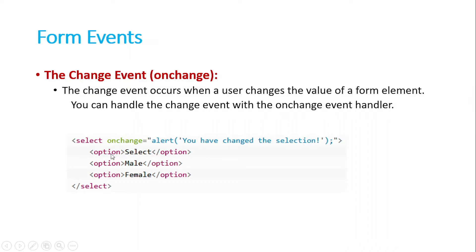We also have the onchange event handler. The onchange event works when somebody changes the value inside an input field — for example, if somebody changes the select option or writes something in an input field. This handler executes because it only occurs when the input field value is changed. In this case, when the select option is changed, the alert will be executed. We can also use this in a normal input field or text area as well.